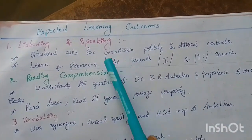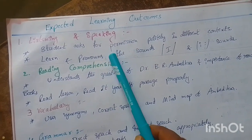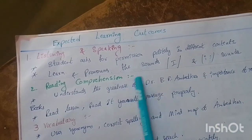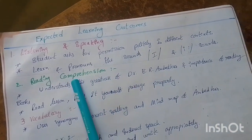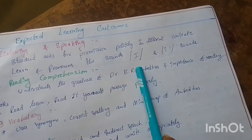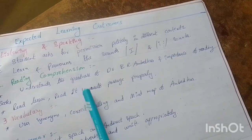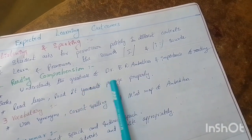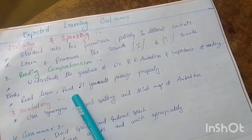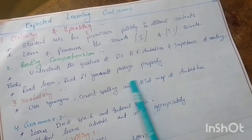Expected learning outcomes — listening and speaking: the student asks for permission politely in different ways and in different contexts, and learns and pronounces the sounds, the 'e' and 'ee' sounds. In reading comprehension: understand the greatness of Dr. B.R. Ambedkar and the importance of reading books; students read the lesson and the 'Read It Yourself' passage properly.